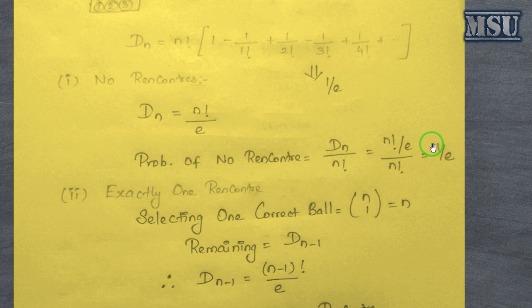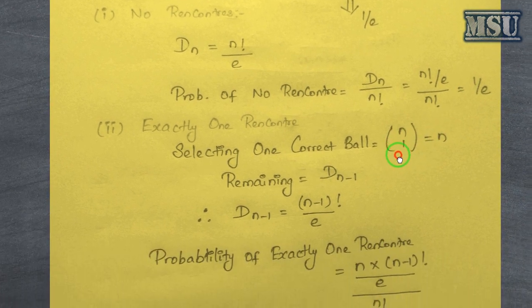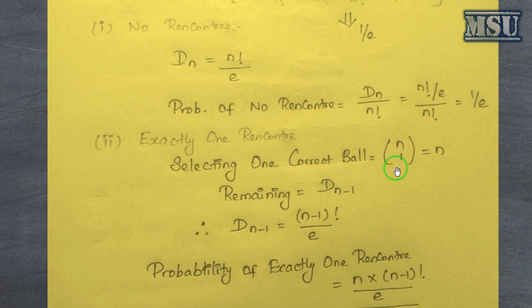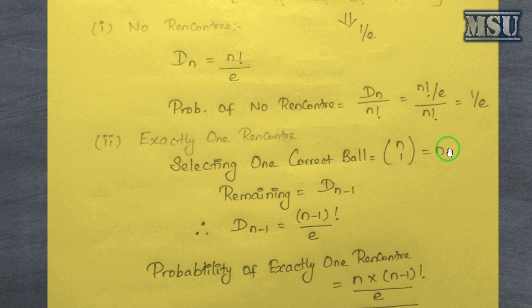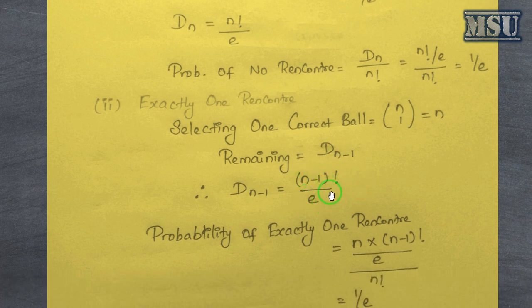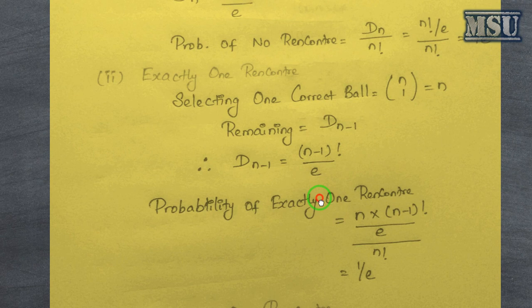The second answer is for exactly 1 rencontre: among n balls you must select exactly 1 correct ball. We select 1 correct ball using nC1, giving n possibilities. The remaining n−1 balls must all be incorrectly placed, so we use the derangement of n−1, which is (n−1)!/e.